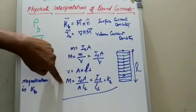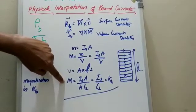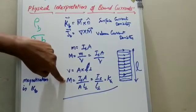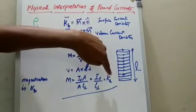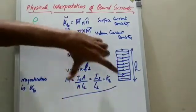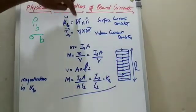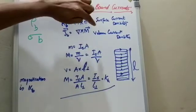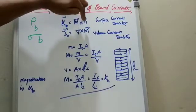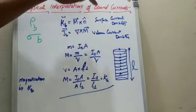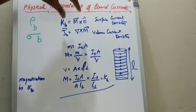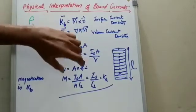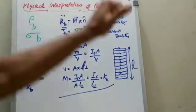Magnetization M is also defined as the surface current density Kb. The unit vector n is drawn normal to the surface. So this is the physical significance: magnetization is also defined as the surface current density.